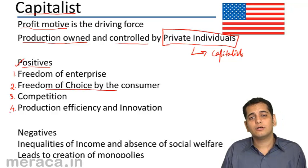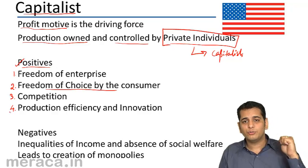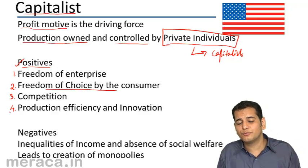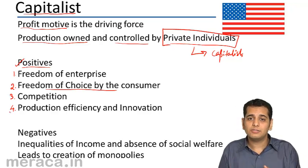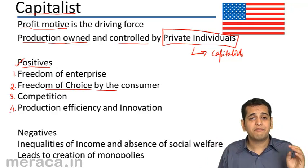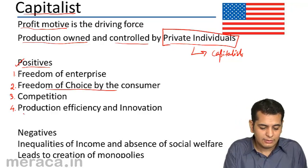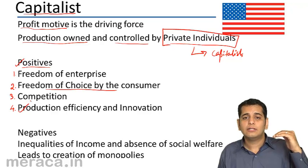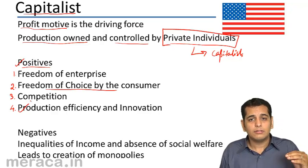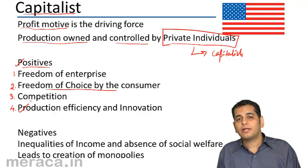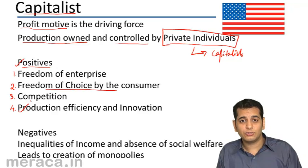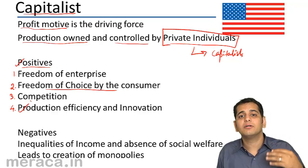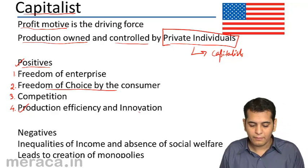The fourth point which is a positive in a capitalist economy is production efficiency and innovation. You are free to produce what you want, the consumer is also free to consume what he wants, and there is a lot of competition in the market. Everybody is trying to sell his product, which brings a lot of production efficiency — everybody is trying to reduce the cost and sell at a cheaper rate. The owners want their labor and machines to be productive, so they employ better machines and skilled labor which yield a better product.